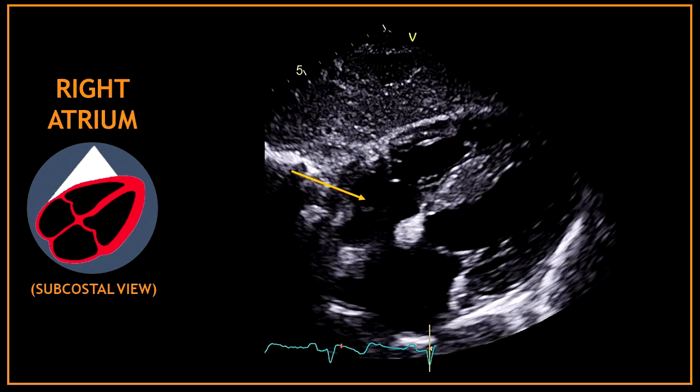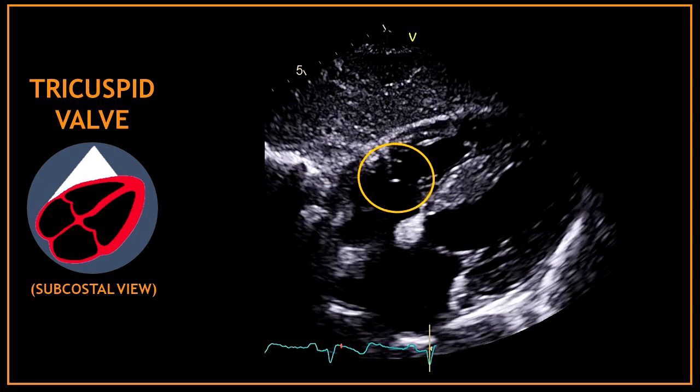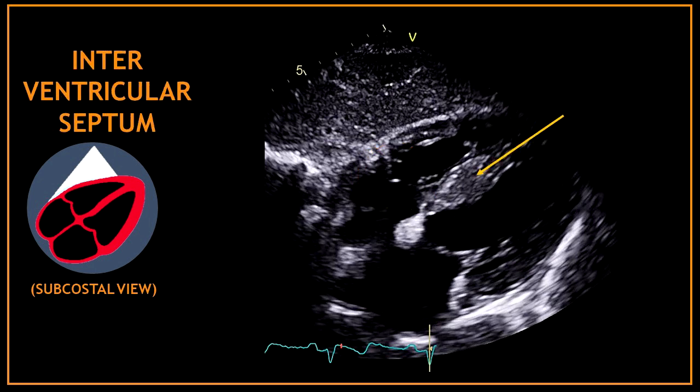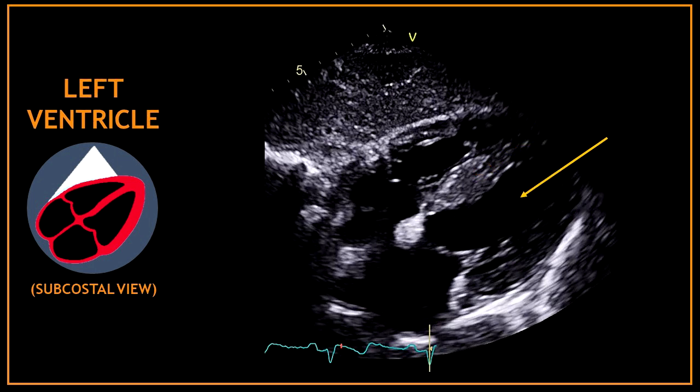More to the left, that rounded echo-free space corresponds to the right atrium. Between the right ventricle and the right atrium we can see the tricuspid valve. Between the two ventricles we have the interventricular septum. Next to the septum, that triangular echo-free space is the left ventricle.